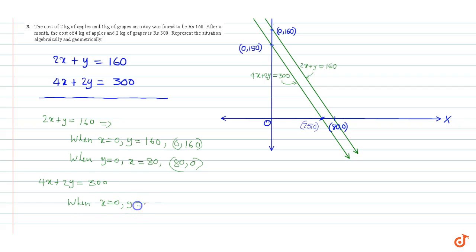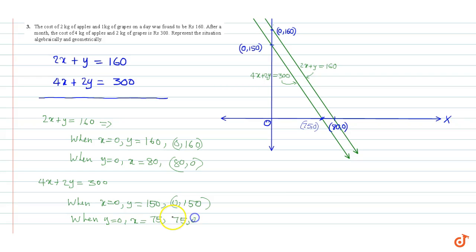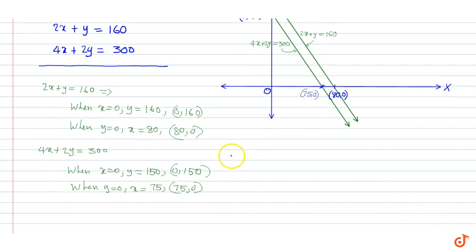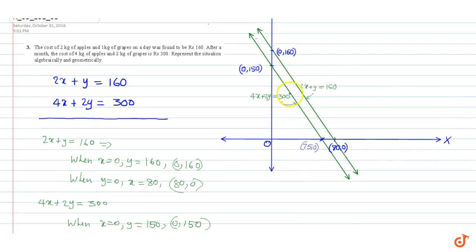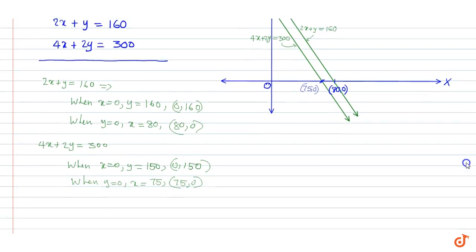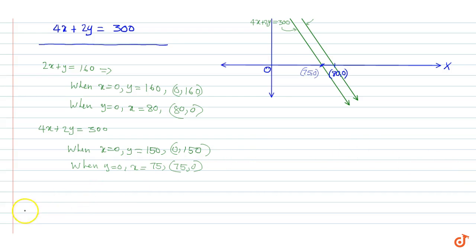For the second equation, 4x plus 2y equal to 300: when x is equal to 0, y is equal to 150, so (0, 150) is one point. When y is equal to 0, x is equal to 75, so (75, 0) is another point. If we draw a line between these two points, we get this line 4x plus 2y equal to 300. That is our geometric representation and our answer to the question.